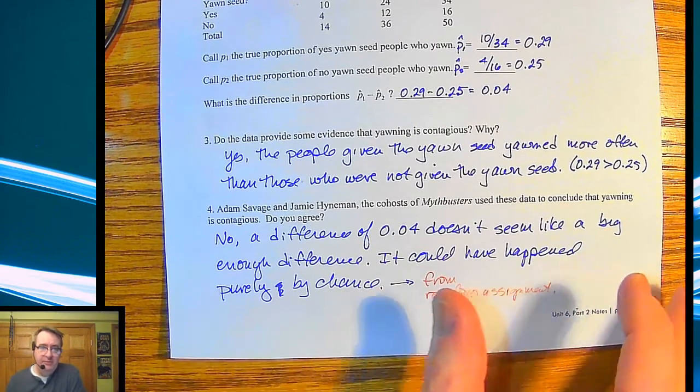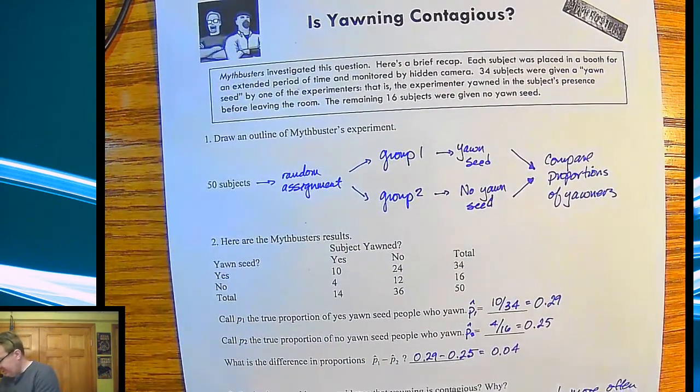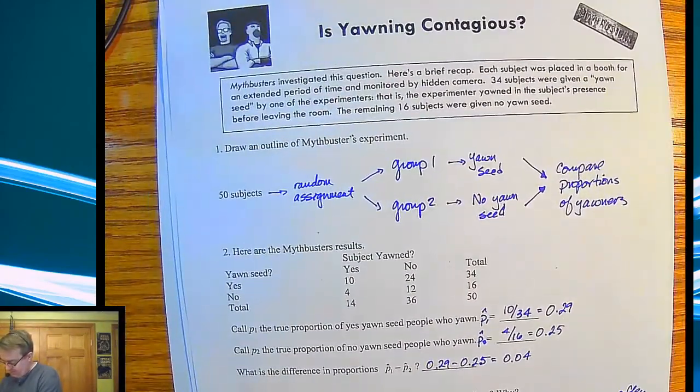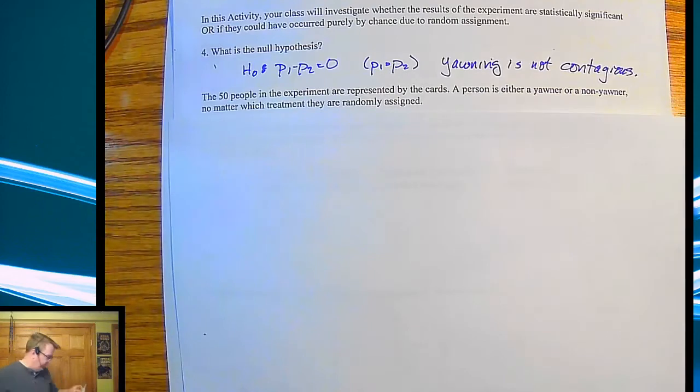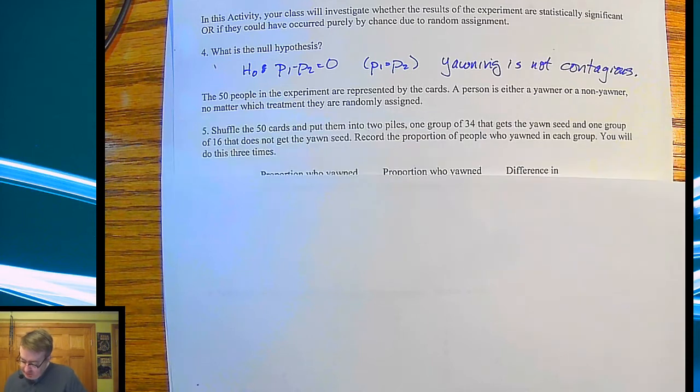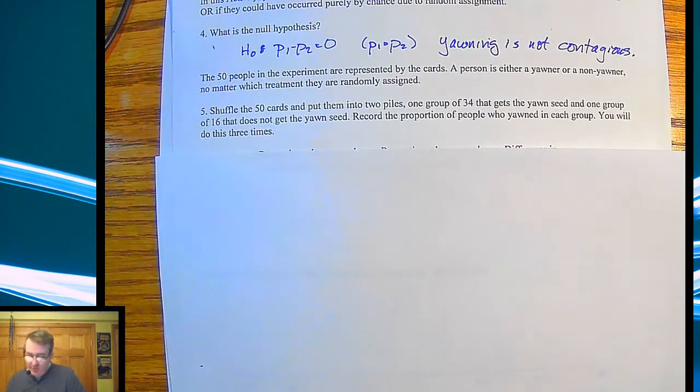So that simulation is going to look something like this. If I can get my pages lined up correctly. Now, there is a beautiful Desmos lesson. And I'll link to that down below, too. I'm forgetting who made it. But if you're watching, thank you very much. And it does lay out very nicely. And it actually also takes care of normally what would end up happening is that you would have 50 cards. And in those cards, it would say yawner or non-yawner. And then you would just randomly assign. And you'd put them in two different piles. You'd put some in the yawn seed pile and some in the non-yawn seed pile. And then you'd just count how many yawners did you have in each group.